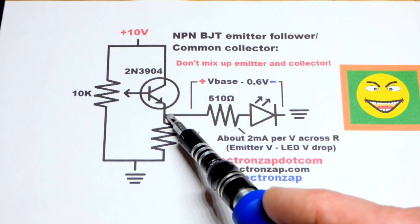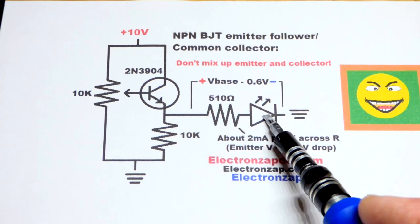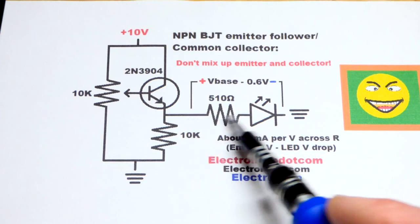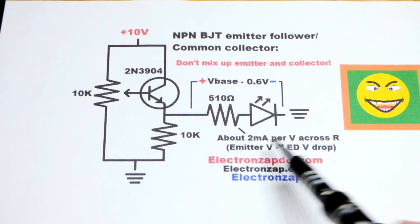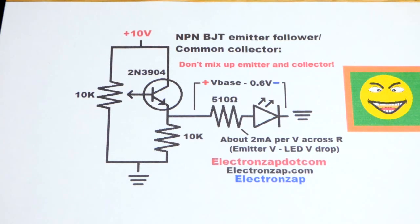So if we set this to 5 volts, the LED is going to drop about 2 volts. And then we'll have about 3 volts across the resistor. About 6 milliamps of current. Remember, about 2 milliamps per volt, approximately. So it makes the math easy, even for mental math. And so that's why I like this load for this particular circuit. Let's look at it on the board.